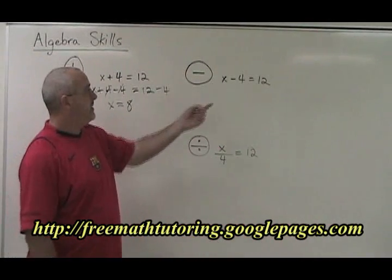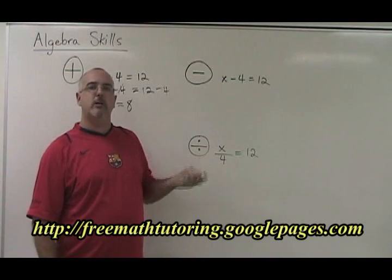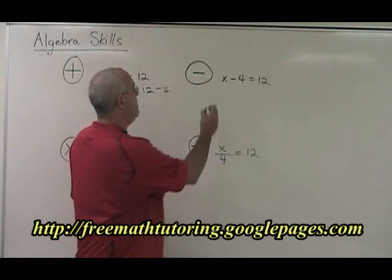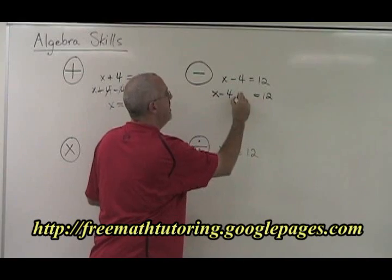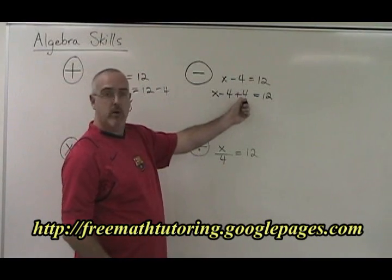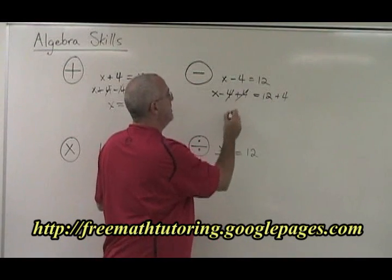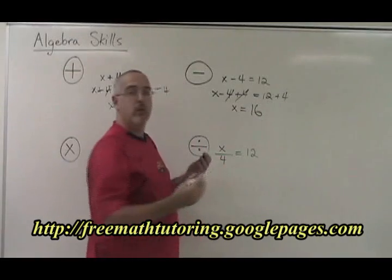Now, subtraction. x minus 4 equals 12. What is x? We have this minus 4 with our x. We don't want it there. We want to isolate the x. So we do the opposite. x minus 4 plus 4 would be the opposite of minus 4. But if we're going to do a plus 4 on the left, we have to do a plus 4 on the right. These cancel and we end up with x equals 12 plus 4, which is 16. We have our answer.